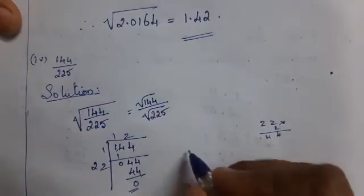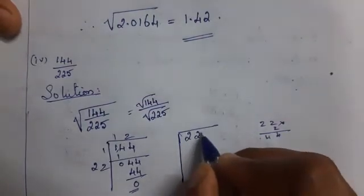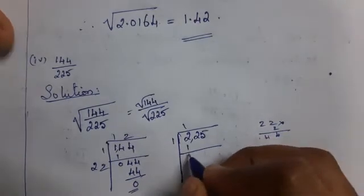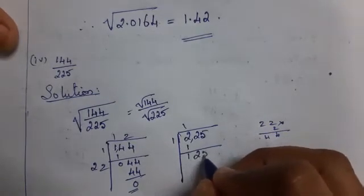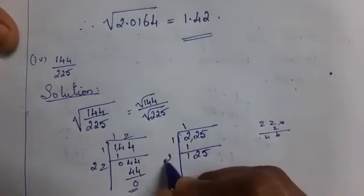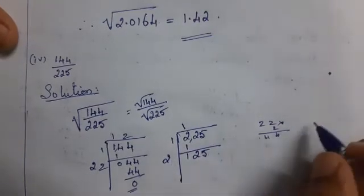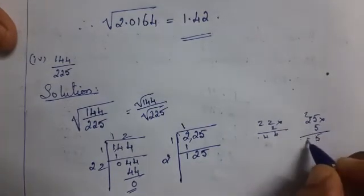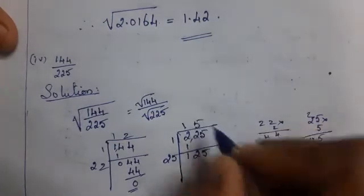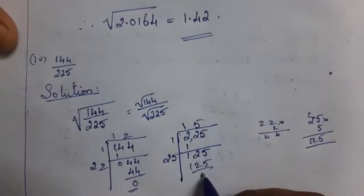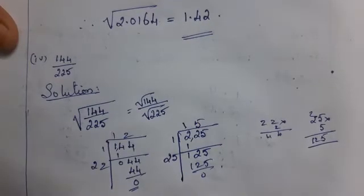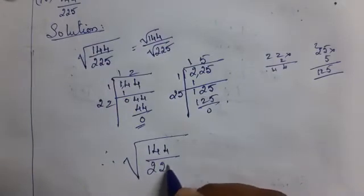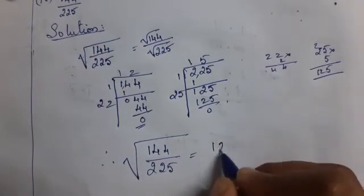Next, find the square root of 225. Put the comma. 1 into 1 is 1. 2 minus 1 is 1. Take the next 2 digits: 125. 1 into 2 is 2. 5 into 5: 25 into 5 is equal to 125. Therefore, square root of 144 divided by 225 is equal to 12 by 15.